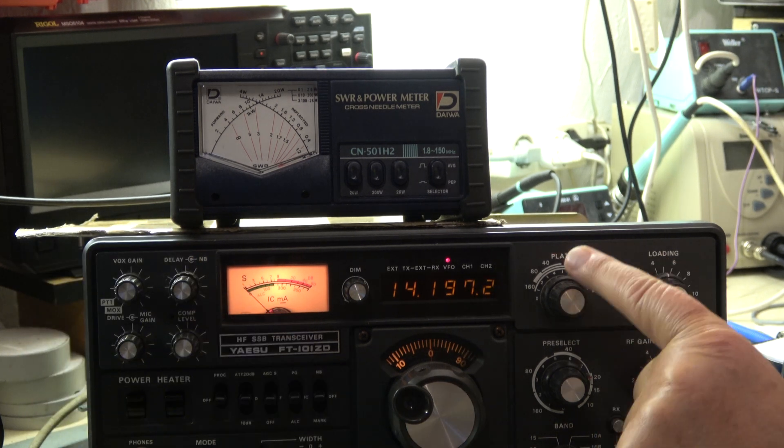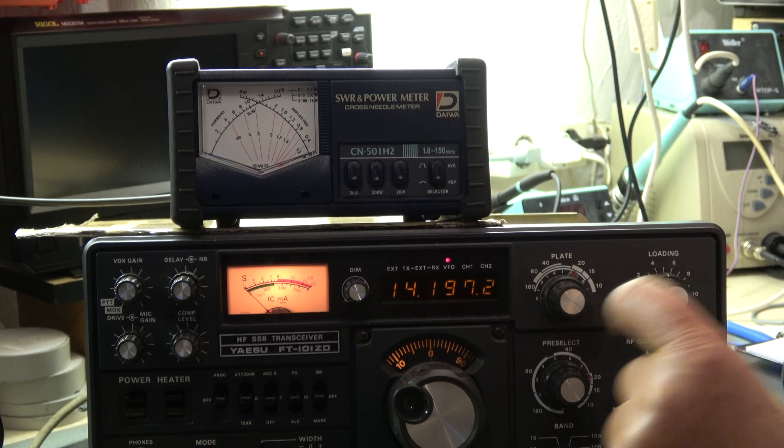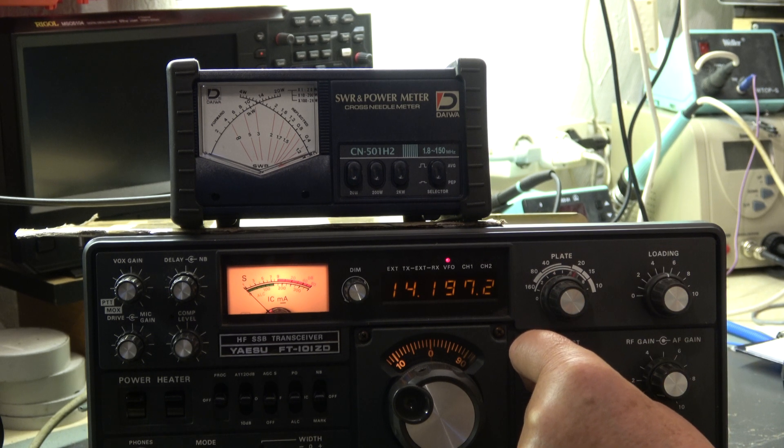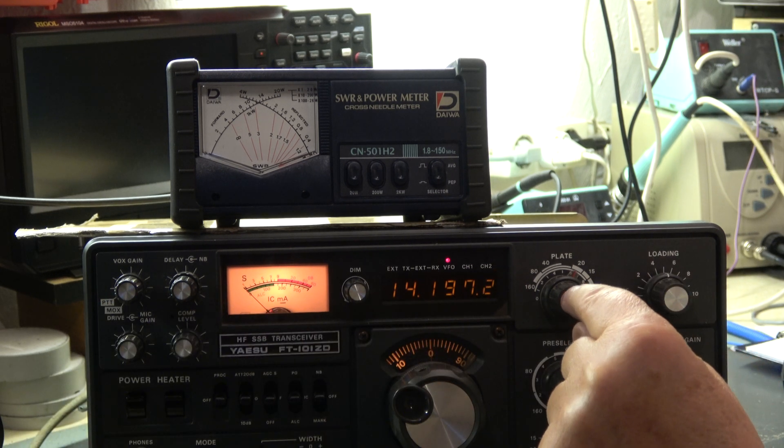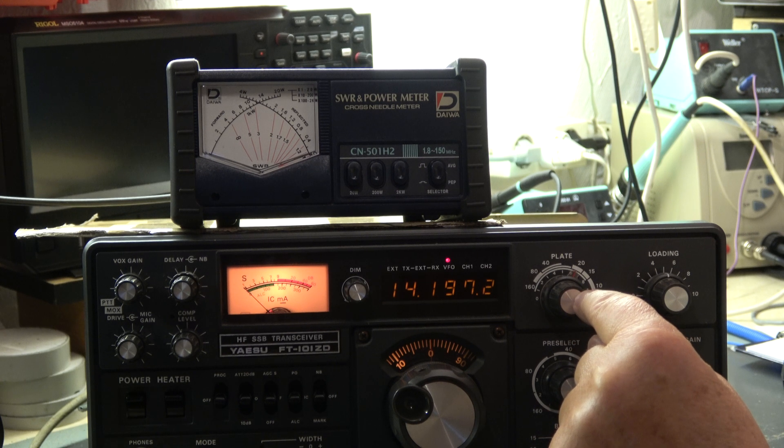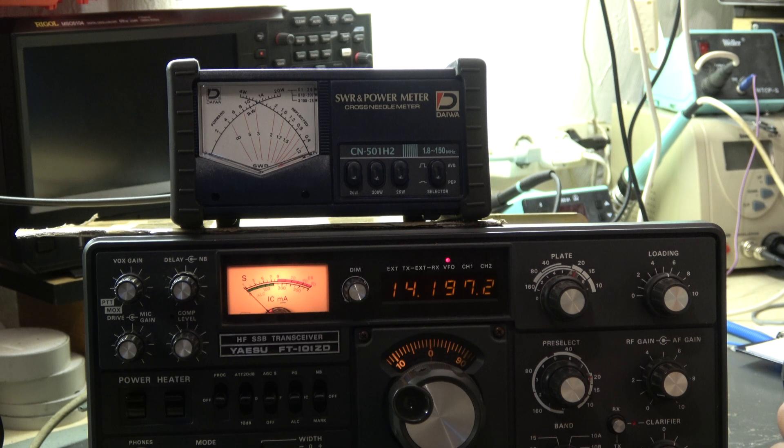You have seen minimum current with plate, maximum output with loading, maximum output of course with pre-selector and with drive. But it is very important to have a dip in the plate current which is in line with the maximum output. And then we have a good aligned PA and nothing will happen.